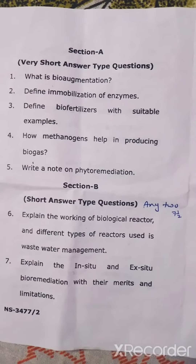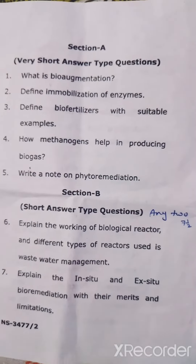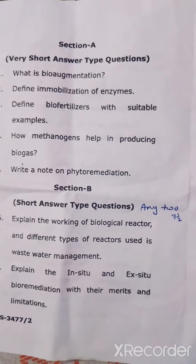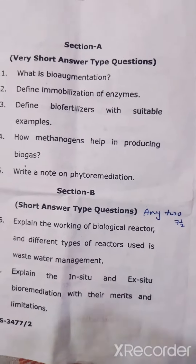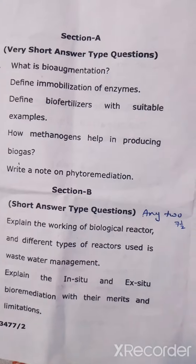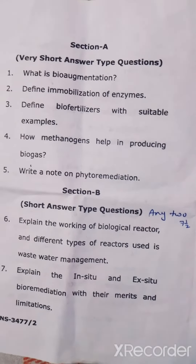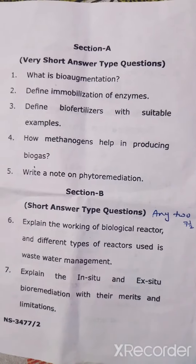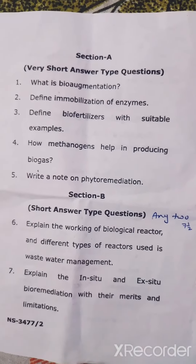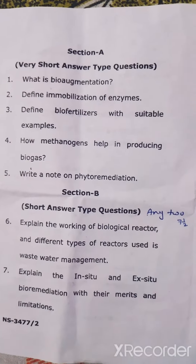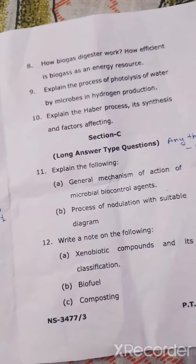You can see Section A: very short question answers. We had to attempt 5 questions in Section A. In Section B, we had to attempt 2 questions. And in Section C, we had to attempt 3 questions.